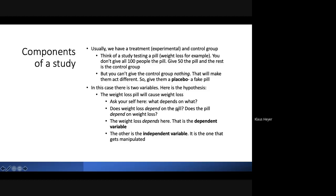One variable is dependent and one is independent. Ask yourself: which one depends on the other? Does weight loss depend on the pill, or does the pill depend on weight loss? The pill doesn't depend on weight loss — it's just a pill. So weight loss is the dependent variable and the pill is the independent variable. The independent variable is usually the one you manipulate — giving the pill to some and the placebo to others.